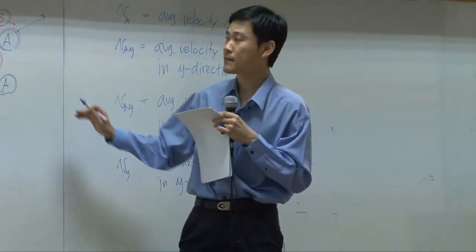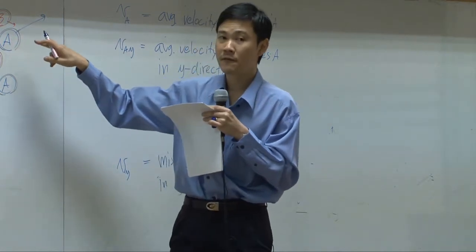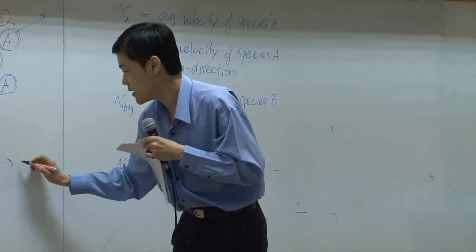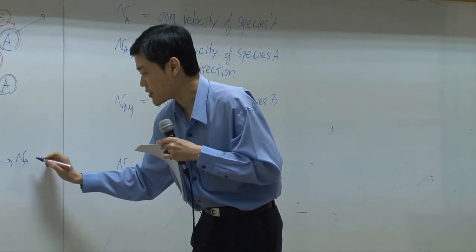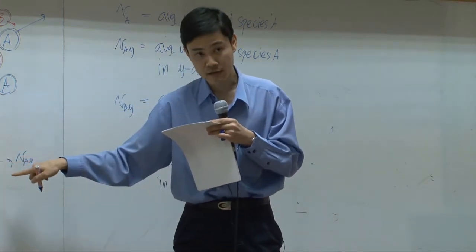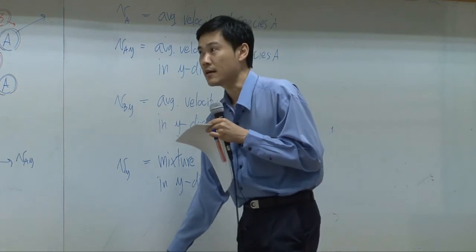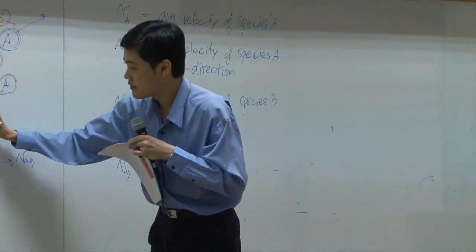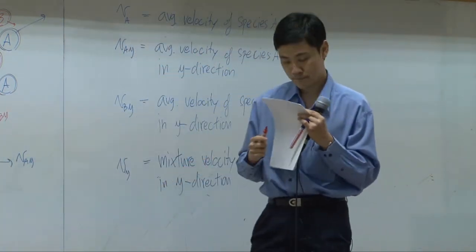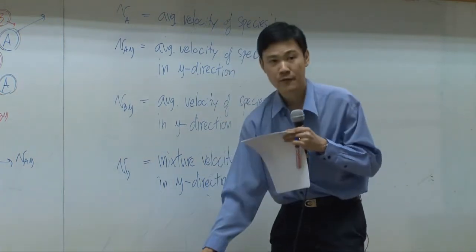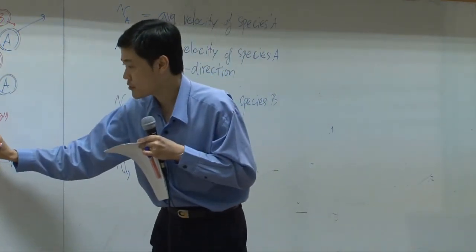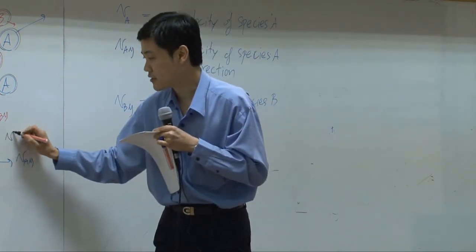According to this picture, species A moves faster than B. So in the y-direction, species A is supposed to be faster. If I represent VAY in the y-direction with a vector, the vector is supposed to be a long vector. But for species B, the vector is shorter — this is VBY. And if you take the average for all species combined, the average velocity is supposed to be somewhere in the middle. So this is VY.